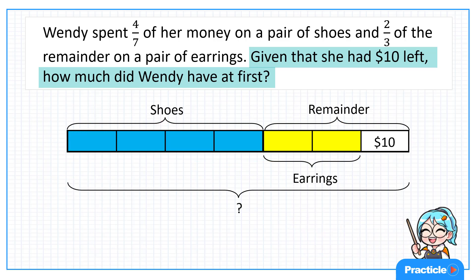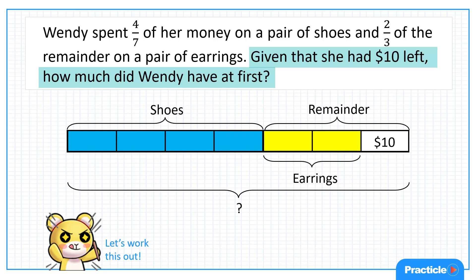Now how can we make use of what we know so far to find the answer to this question? Since one unit represents $10, we can find the value of 7 units by multiplying $10 by 7. Do you get that? And $10 multiplied by 7 is $70. So now we know that Wendy had $70 at first.